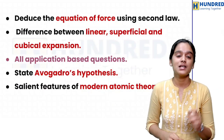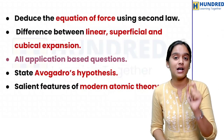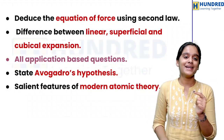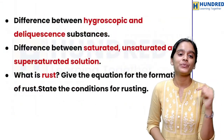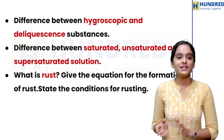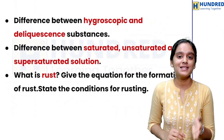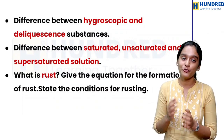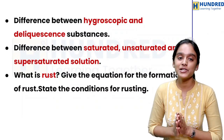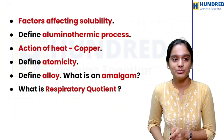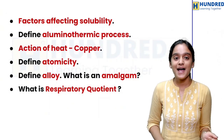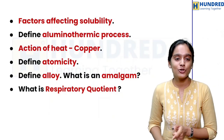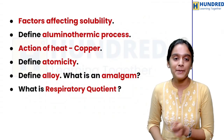State Avogadro's hypothesis — you should not change any word. Next: salient features of modern atomic theory. Difference between hygroscopic and deliquescent substances. Difference between saturated, unsaturated, and supersaturated solution. What is rust? Give the equation for formation of rust and state the conditions for rusting. Factors affecting solubility. Define aluminothermic process. Action of heat on copper — this is very important. Define atomicity. Define alloy. What is an amalgam?